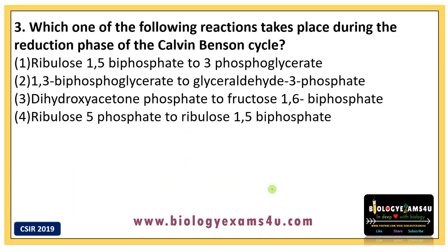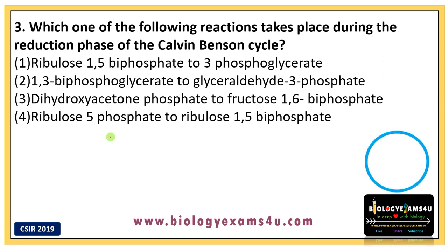Question three: Which one of the following reactions takes place during the reduction phase of the Calvin-Benson cycle? Options are: one, ribulose-1,5-bisphosphate to 3-phosphoglycerate; two, 3-phosphoglycerate to 1,3-bisphosphoglycerate; three, 1,3-bisphosphoglycerate to glyceraldehyde-3-phosphate; four, dihydroxyacetone phosphate to fructose-1,6-bisphosphate; and five, ribulose-5-phosphate to ribulose-1,5-bisphosphate. You have five seconds.